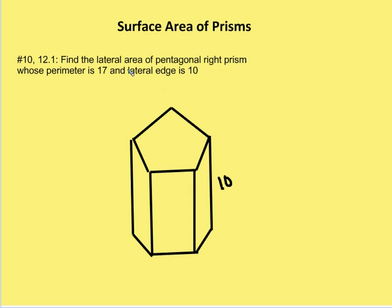Well, this is pretty simple to solve. We're just finding the lateral area, not the total area. So the lateral area, in this case, is just the perimeter times the height.